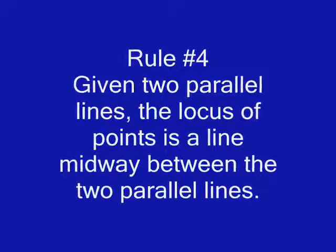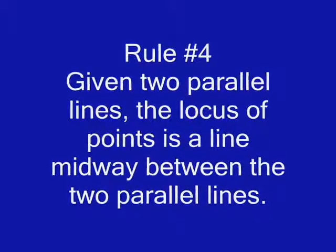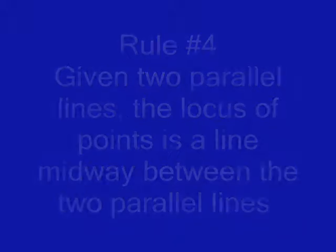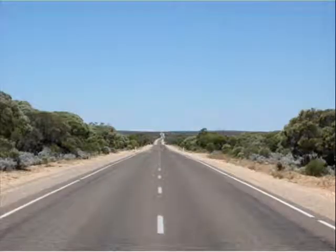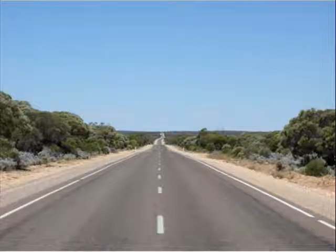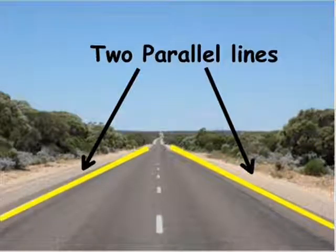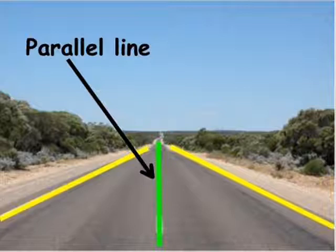Rule number four: given two parallel lines, the locus of points is a line midway between the two parallel lines. Many roads have white lines painted on each side of the road to keep drivers alert and guide them so they don't travel off the road. Let the white lines represent two parallel lines. By rule number four, the locus of points is a parallel line midway between them, which divides the road in half for traffic to travel in both directions.